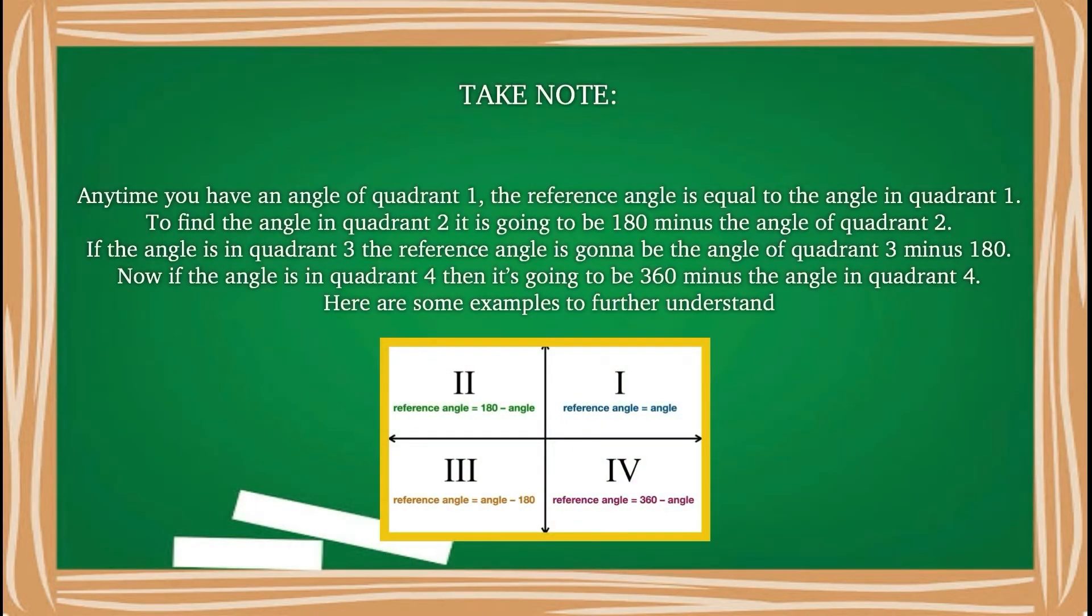The reference angle is always between the terminal ray and the x-axis. There are some important notes that you can use to easily find the reference angle. Anytime you have an angle of quadrant 1, the reference angle is equal to the angle in quadrant 1. To find the angle in quadrant 2, it is going to be 180 minus the angle of quadrant 2.